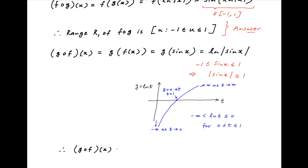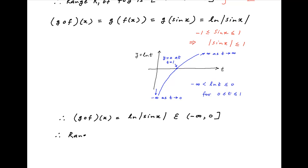The composition function g of f of x, which is equal to ln of modulus of sin x, lies in the interval minus infinity to 0. In other words, the range R2 of the composition g of f is the interval minus infinity to 0. And this is the required answer of the second part of the problem.